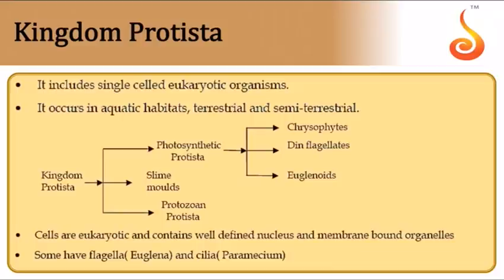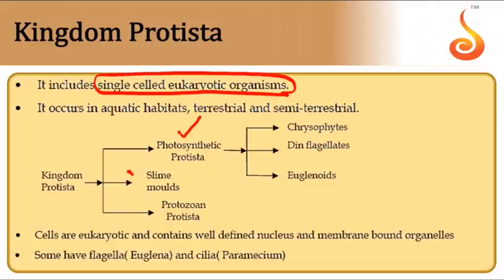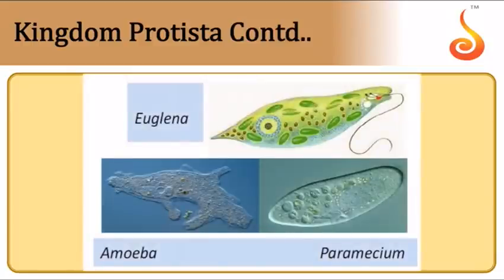Kingdom Protista includes exclusively unicellular eukaryotic organisms. They are classified into photosynthetic protists, slime moulds, and protozoan protists.